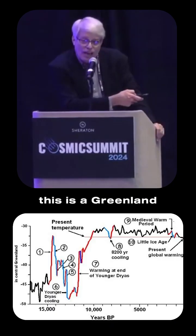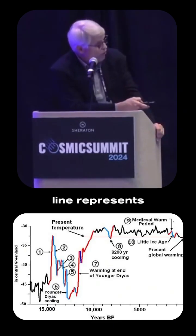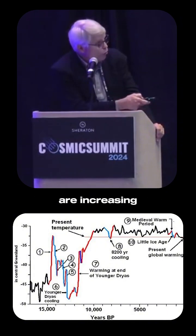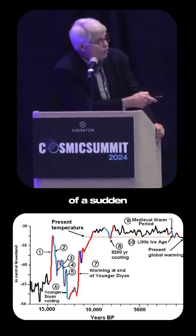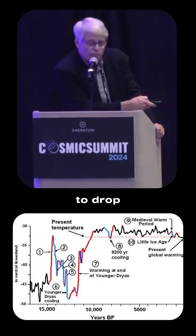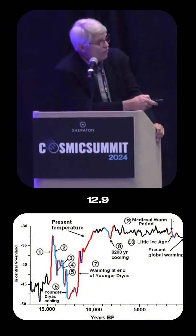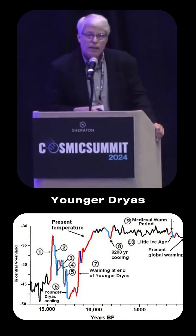This is Greenland ice core data and you can see this red line represents temperature. You can see these temperatures are increasing dramatically, and then all of a sudden around 14,000 years ago it starts to drop — very dramatically at 12,800 to 12,900 years ago. That's that little bar here: the Younger Dryas.